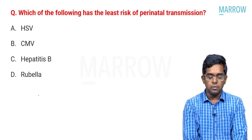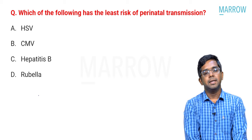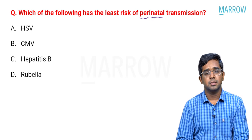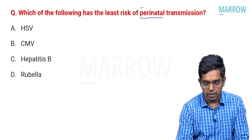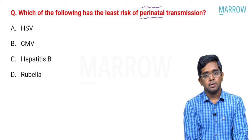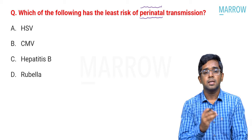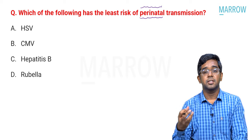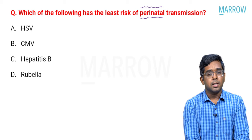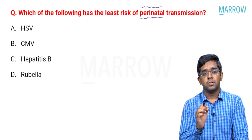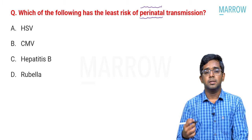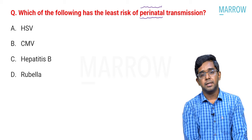Moving on to the next question: which of the following has the least risk of perinatal transmission? Perinatal transmission refers to transmission around delivery time — through contact with the mother, secretions, or breastfeeding. The options are herpes simplex virus, cytomegalovirus, hepatitis B, and rubella. Herpes simplex and CMV can very well be transmitted by contact with infected vesicles in the perinatal period.